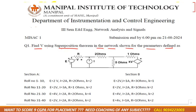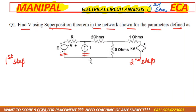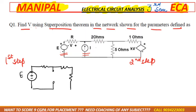In the first step, we take the first source and eliminate the second source. The second source is a current source. Now, should the current source be open-circuited or short-circuited? A current source will be open-circuited. So in step one, we take source e and open-circuit source i. The rest of the diagram remains the same, and the dependent source is always present in each step.